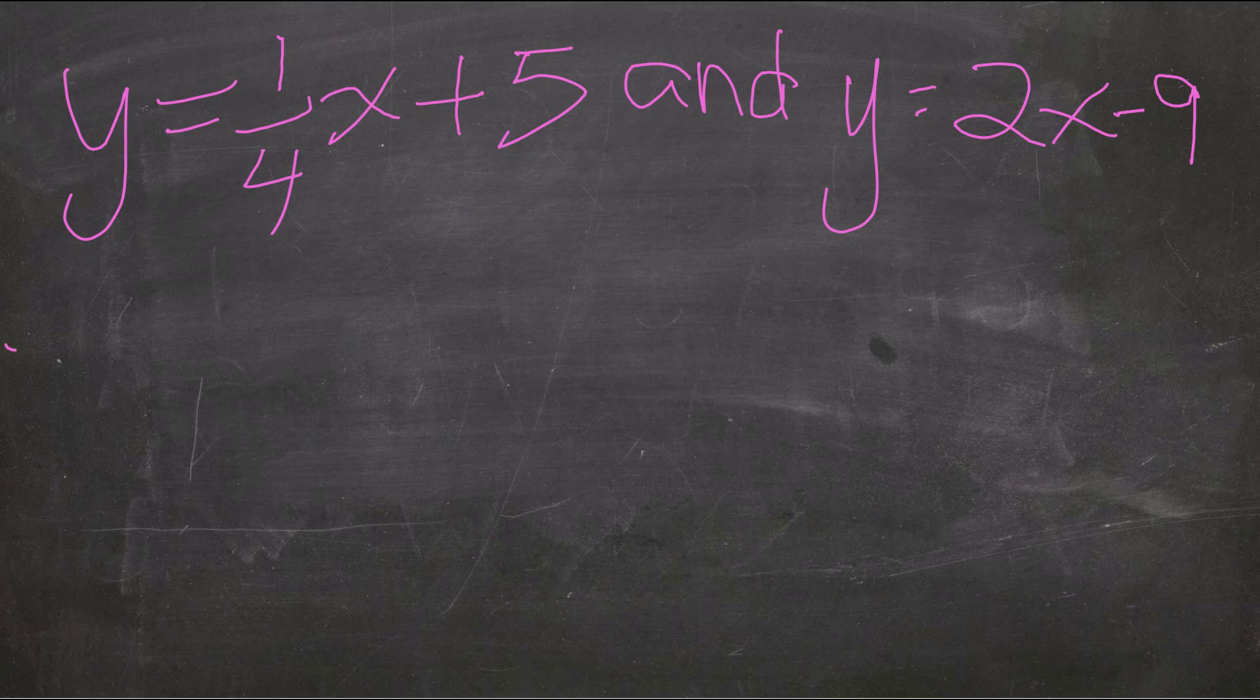We are going to use the equal values method to solve this system. We have y equals 1 fourth x plus 5 and y equals 2x minus 9.